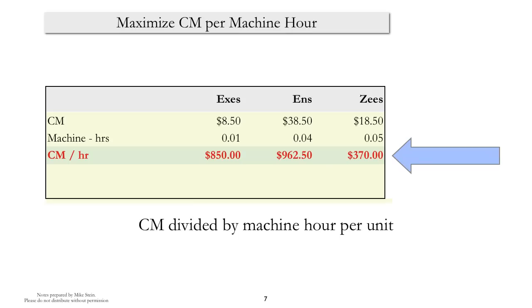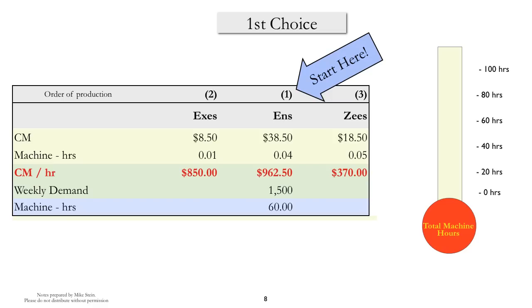How are we going to do that? Well, given that our objective is to maximize contribution margin per machine hour, let's determine what the contribution margin per machine hour is for each of the three products. And we do that by taking the contribution margin per unit and dividing by the number of machine hours per unit.